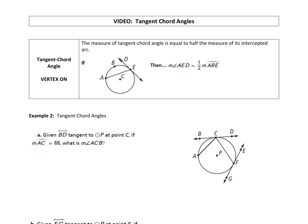All right, so we have a theorem that says the measure of a tangent chord angle is equal to half the measure of its intercepted arc. So it's just like our inscribed angles. Inscribed angles equal to half the intercepted arc. Just it looks a little different when you have a tangent.